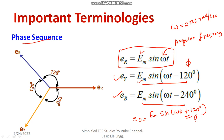So this is called the phase sequence: eR, eY, eB — that is the sequence of voltages generated in each conductor, and that is referred to as phase sequence.